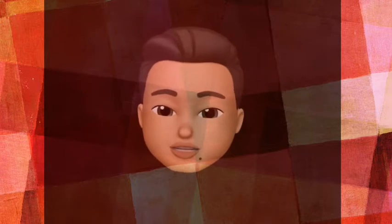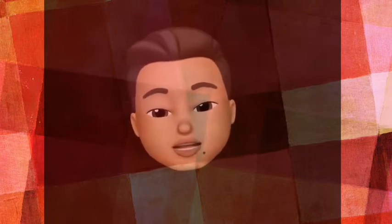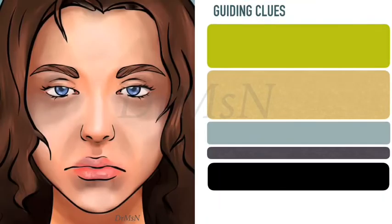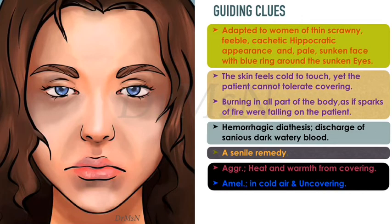And the guiding clues — the most important part of a medicine. The combination of guiding clues is unique and it will guide you to that particular medicine. Look at that picture — it's exactly like Secale's appearance. Adapted to women of thin, scrawny, feeble, cachectic, Hippocratic appearance with a pale, sunken face and blue rings around the sunken eyes.